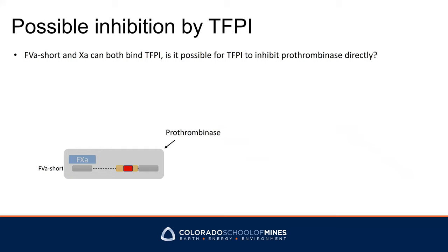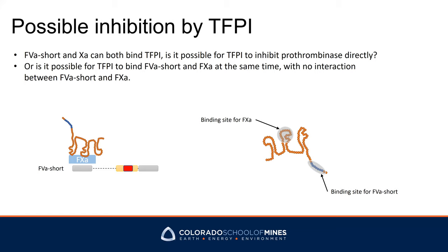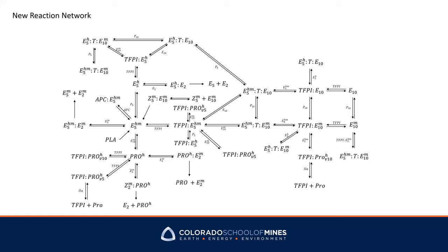Based on these interactions, there are other possible reactions to consider. Since both factor 10a and factor 5a short can be inhibited by TFPI, and they can form a prothrombinase complex to generate thrombin, is it possible for TFPI to directly inhibit prothrombinase by binding to factor 5a short or factor 10a? Since the binding sites for factor 10a and factor 5a short are far apart on TFPI, is it possible for TFPI to bind both simultaneously with no interaction between factor 10a and factor 5a short? Therefore, we are including all possible interactions between TFPI, factor 10a, and factor 5a short into the coagulation flow model.